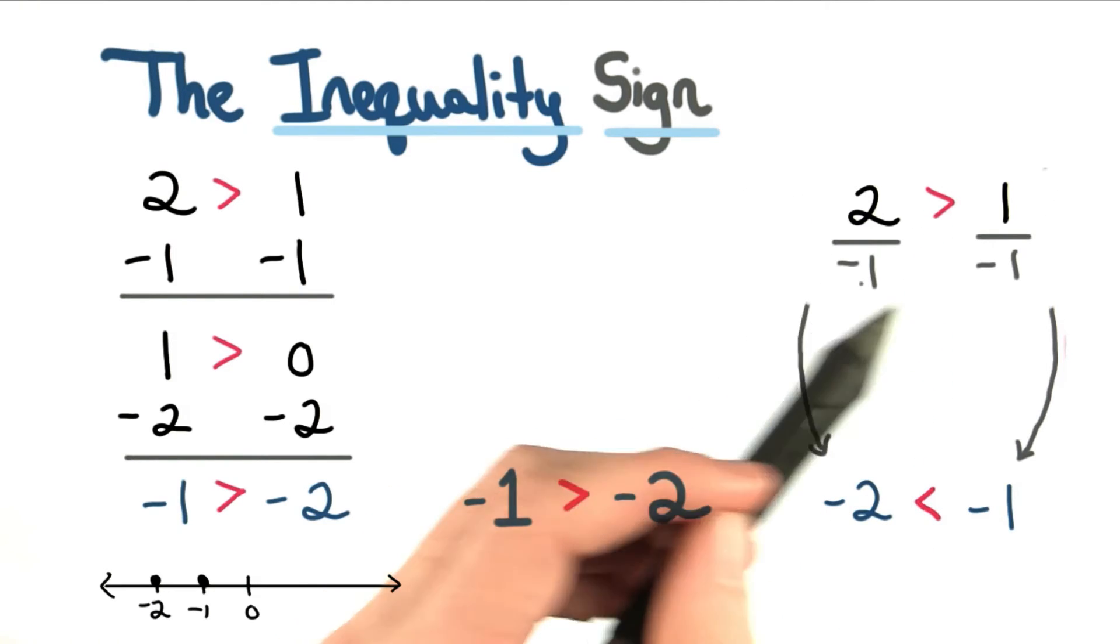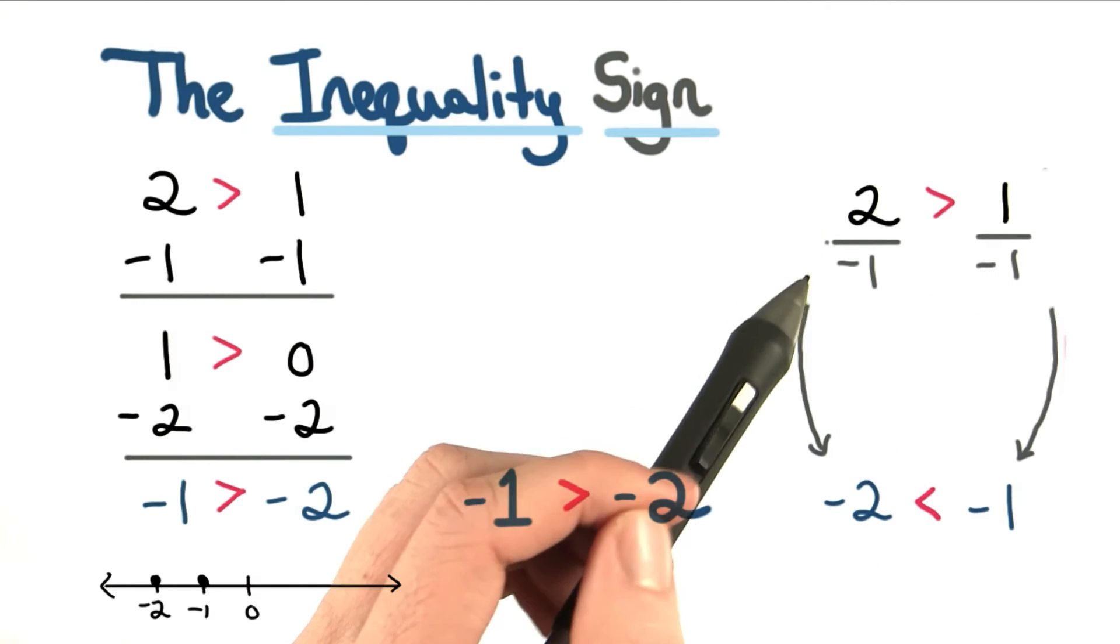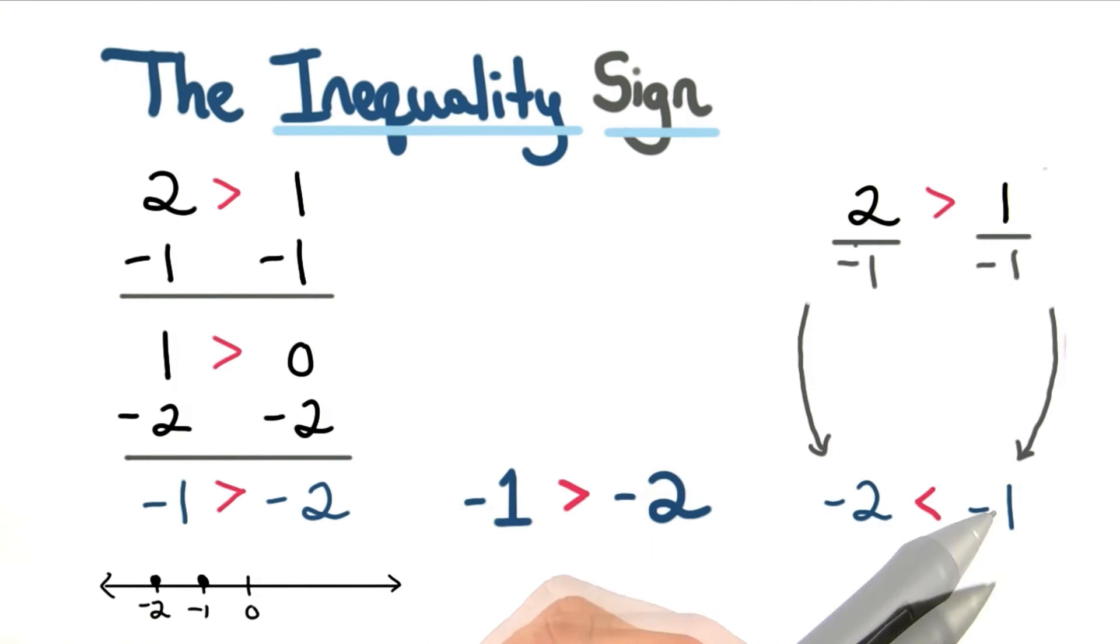The same is true when dividing by a negative 1. We know when we divide by a negative 1, we change the signs of the numbers, so I'll still need to flip my inequality sign.